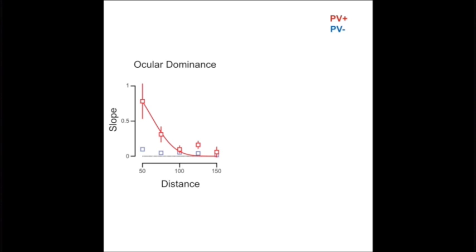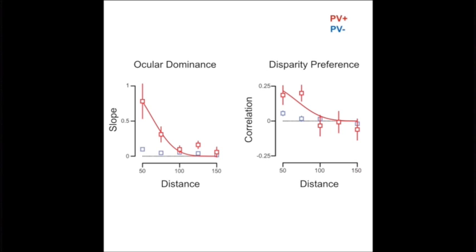Interestingly, we did not observe this spatial relationship for non-PV neurons. For disparity preference, we found a very similar spatial relationship, but only in PV cells.